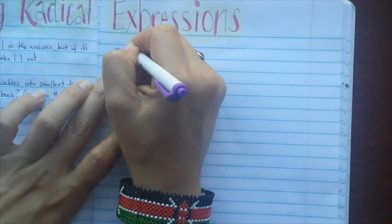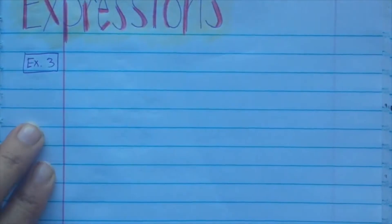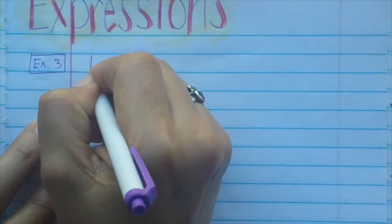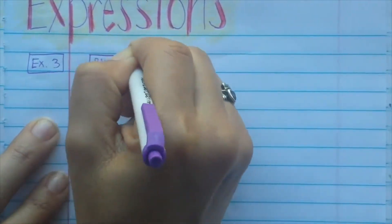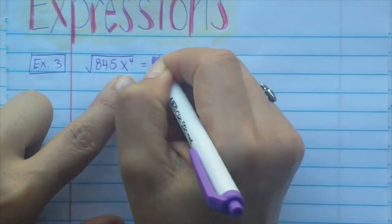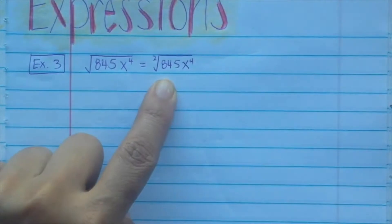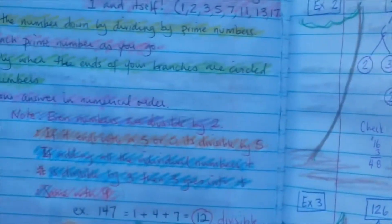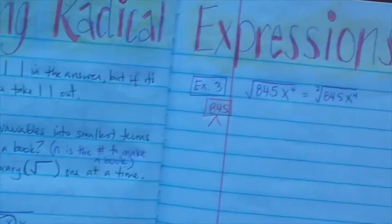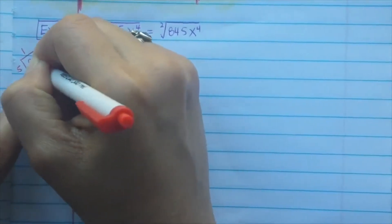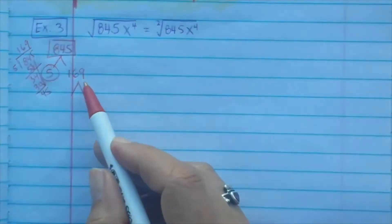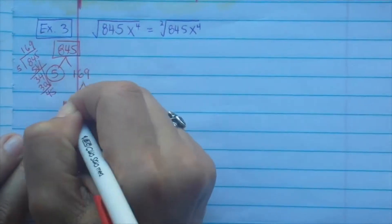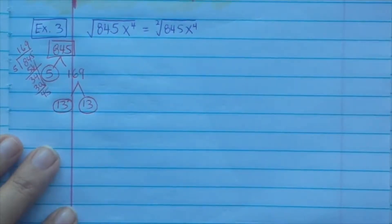Example 3: the square root of 845x^4. The square root is automatically a 2 outside. Break down 845 — since it ends in 5, I know 5 goes into it. Using long division, 845 ÷ 5 = 169. And 169 = 13 times 13. So 845 = 5 times 13 times 13.